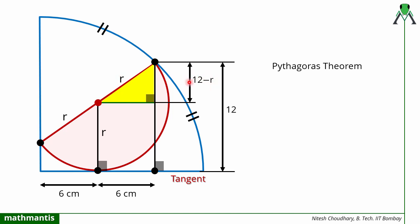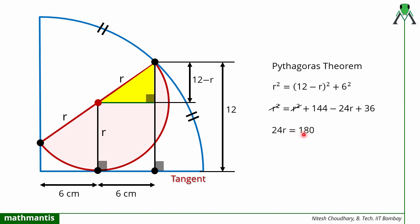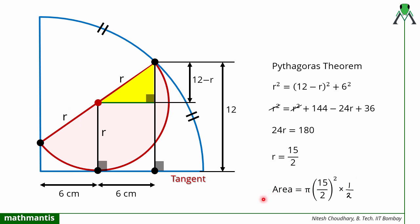By the Pythagorean theorem: hypotenuse squared, r squared, equals perpendicular squared plus base squared, which is 6 squared. Expanding using (a − b)²: r² + 144 − 24r = 36 + r². The r² terms cancel, giving 24r = 144 − 36 = 108... wait — 144 minus 36 gives 108, so actually 24r = 108, meaning r = 108/24. Correcting per the transcript: 24r = 180, r = 180/24 = 15/2 = 7.5. Now the area of the semicircle is (1/2)πr², which is the answer to this problem.